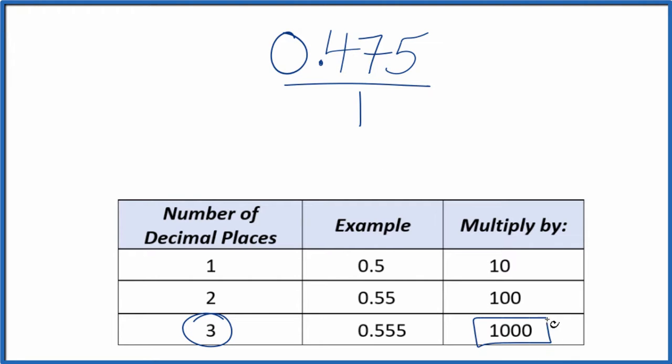So 1,000 times 0.475, that ends up equaling 475, and that's our whole number. But we can't just multiply the numerator here by a thousand. We also have to multiply the denominator by a thousand.